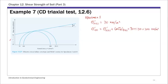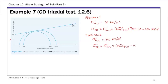For specimen 2, you're given sigma 3 at failure, so that's 160 kPa. And sigma 1 at failure for specimen 2 is sigma 3 plus the deviator stress: 160 plus 223.5, which gives 383.5 kilonewtons per meter squared.